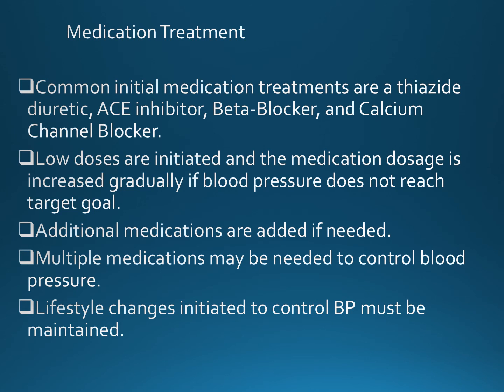The most common initial medication treatments are a thiazide diuretic, ACE inhibitor, beta blocker, or a calcium channel blocker. Low doses are initiated and the dosage is increased gradually if blood pressure does not reach the targeted goal. Additional medications are added if needed, and multiple medications may be required to control blood pressure. Lifestyle changes should be initiated and maintained throughout treatment.